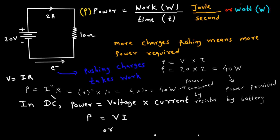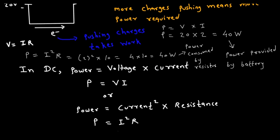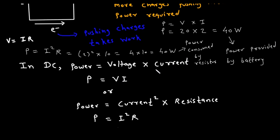So the formula P = I²R is used to find the power consumed, and the formula P = V×I is used to find power delivered. Now in DC circuits, power is given by voltage into current — this is the simple formula to calculate power. Voltage is represented by V, current is represented by I, and power is represented by P. Or there is one more formula: power is equal to current square into resistance.